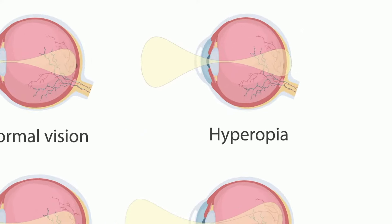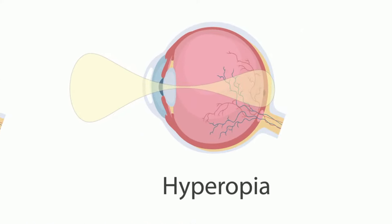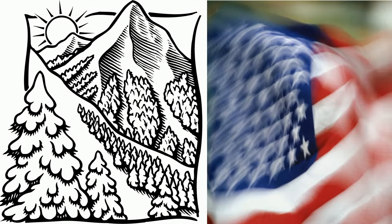Farsightedness, or hyperopia, hyper meaning beyond, means that people can see objects far away but objects close are blurry because the light is focused beyond the retina.